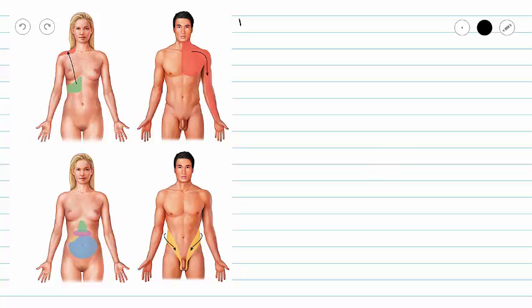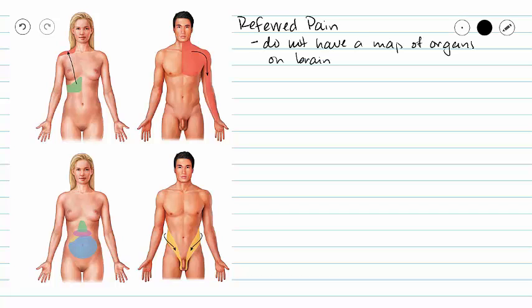One of them is referred pain. Remember, you do not have a map of your organs on your brain; you have a map of your somatosensory system, which is your skin and muscles, but not your organs. So when your organs are stimulated very strongly by a sensation such as pain, some of those electrical signals bleed or jump over into a labeled line in the brain associated with a part of your somatic senses.